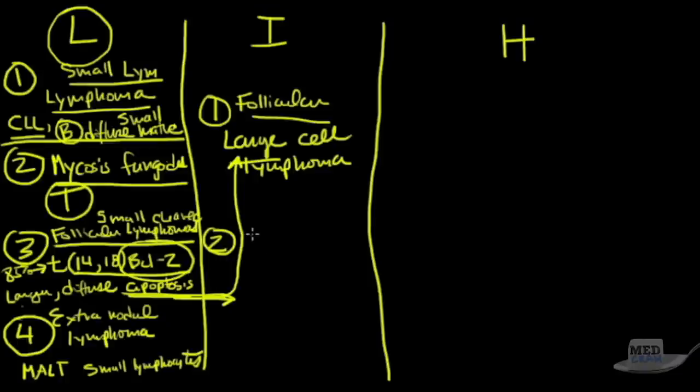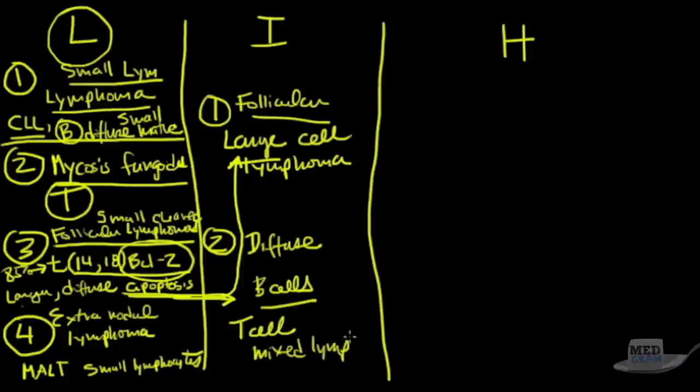The other type is something called a diffuse lymphoma. Here you'll see B cells - we said half the B cells can form diffuse or half can form follicles. These are going to form diffuse with no follicles. Or you can get a T cell mixed lymphoma. Those are the two that I think you ought to know - follicular large cell lymphoma and diffuse lymphomas.